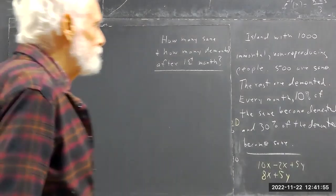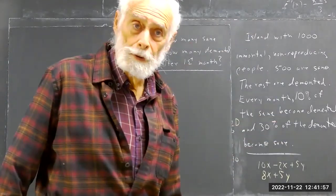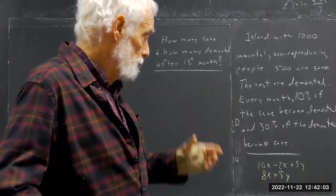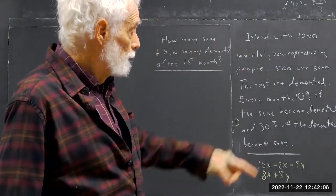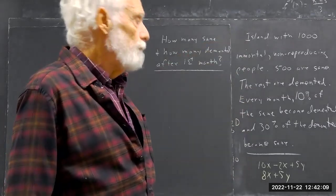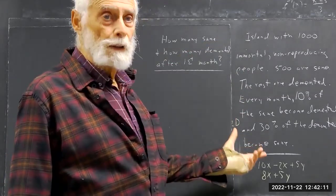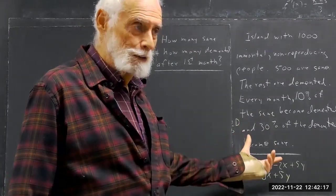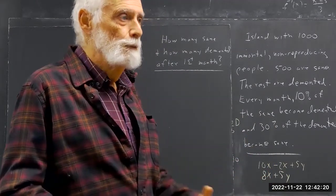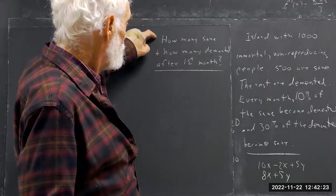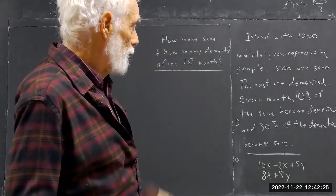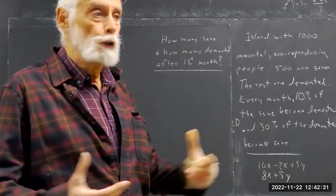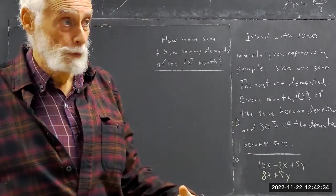The advice I usually give: calculate whatever you can calculate here, and then think about how those results get you closer to the goal of saying how many sane and how many demented you have after the first month. There are a couple of obvious calculations to do — go ahead and do them, think about what those numbers mean, and what you would do next.